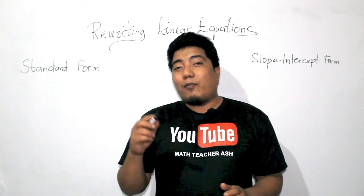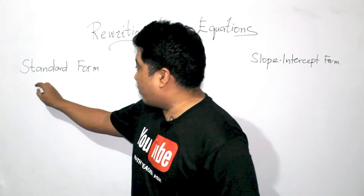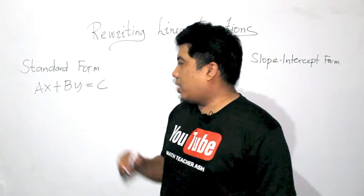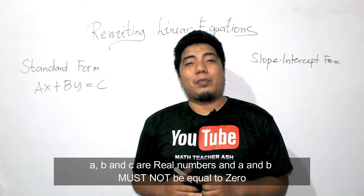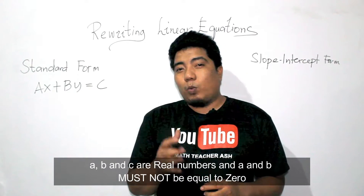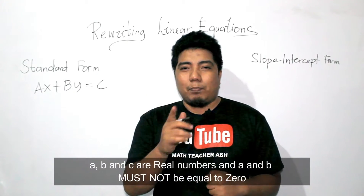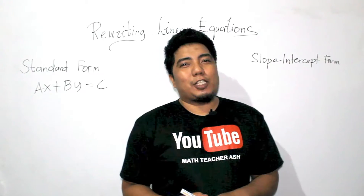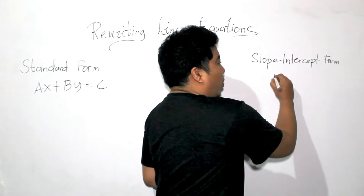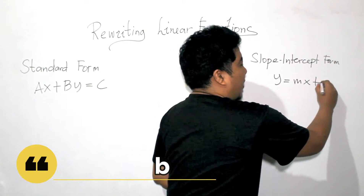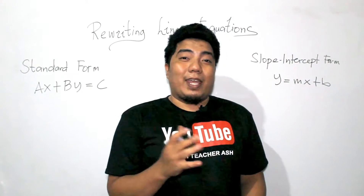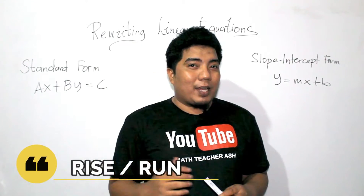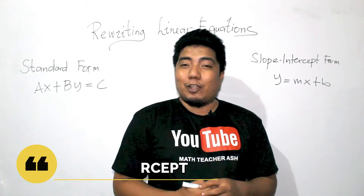The standard form for a linear equation is given as AX plus BY is equal to C, where A, B, C are real numbers and X and Y are the variables, and A and B must not be equal to zero. The slope-intercept form has the form Y is equal to MX plus B, where Y and X are the variables, M is your slope — meaning rise over run — and B is the Y-intercept.